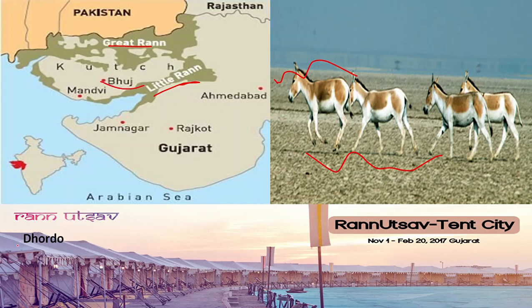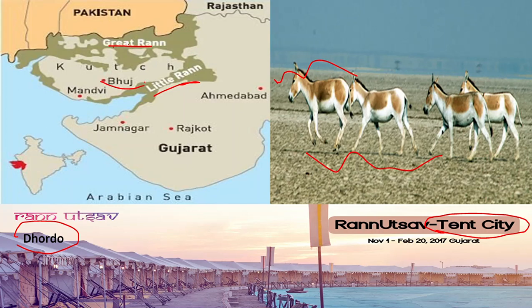The Rann of Kutch is famous for tourism with various desert resorts. The very famous Rann Utsav takes place near Bhuj at a place called Ordo, where a tent city is developed and the festival is celebrated with great liveliness. You'll find different wildlife here — flamingos, various birds, and wild animals — making this region rich in flora, fauna, and biodiversity.